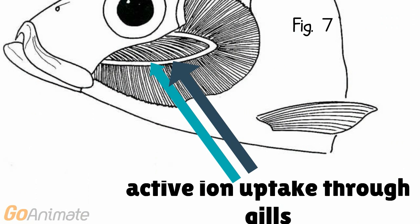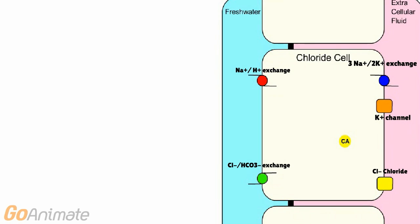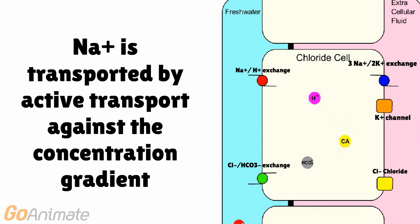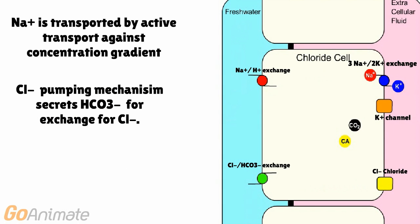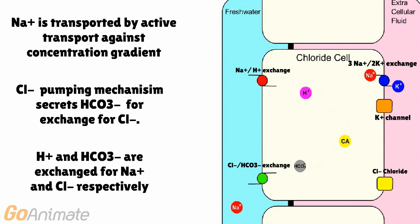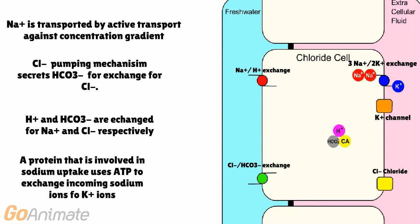Let's take a closer look at the ion exchange mechanism in freshwater fish. The mechanisms of Na+ uptake and Cl- uptake are independent and different. From dilute surrounding water into concentrated blood, Na+ is transported by active transport against the concentration gradient, simultaneously secreting H+ into the water in exchange for Na+. The chloride pumping mechanism secretes bicarbonate ions (HCO3-) in exchange for Cl-. Both H+ and HCO3- are metabolic waste products derived from CO2 produced by metabolism. They prevent large charge differences from building up across the gill epithelium. A protein involved in sodium uptake uses ATP to exchange incoming sodium ions for potassium ions.